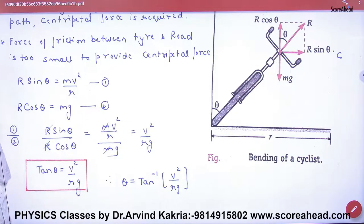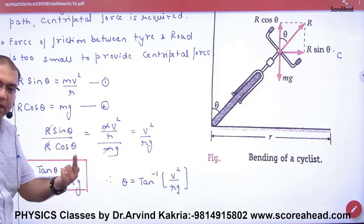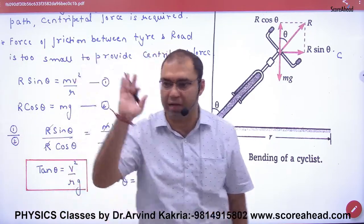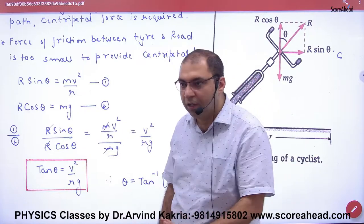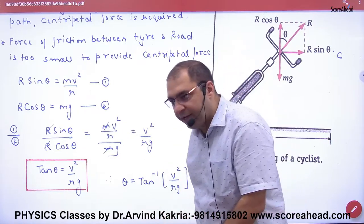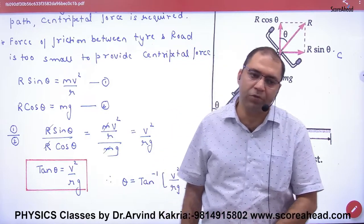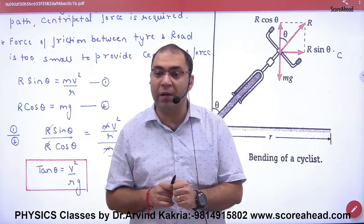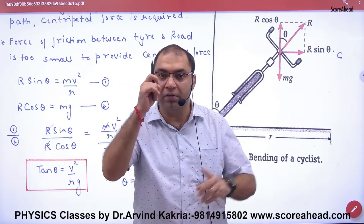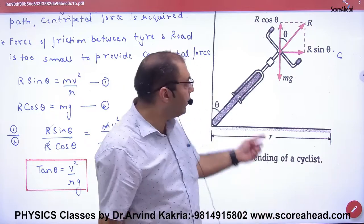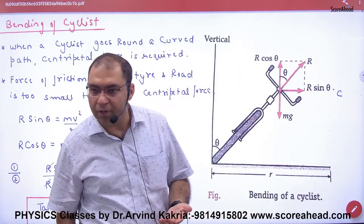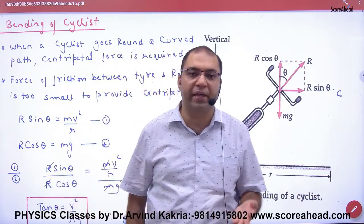So if the question gives you the cycle velocity, radius, and g, you can find theta. Dividing the two equations: tan theta = v² / (rg). If the answer is 1, then tan theta = 1, meaning theta = 45 degrees. So the cycle will bend 45 degrees. You can write theta = tan inverse (v² / rg). Without bending, R sin zero = zero, so there is no centripetal force and the cycle cannot go in a circle. This is the case of bending of a cyclist.